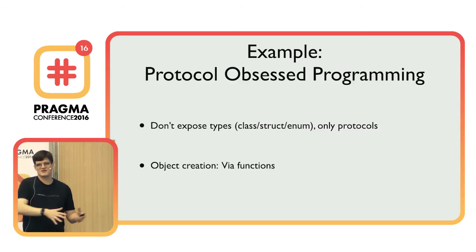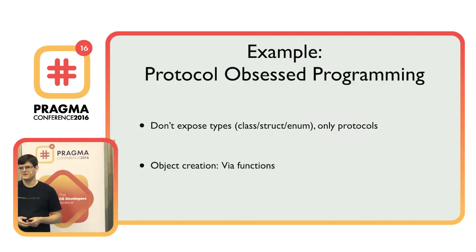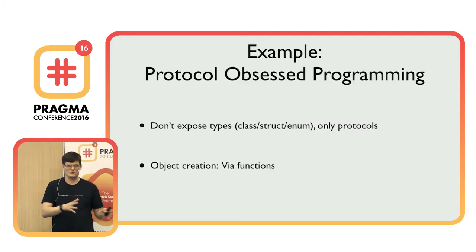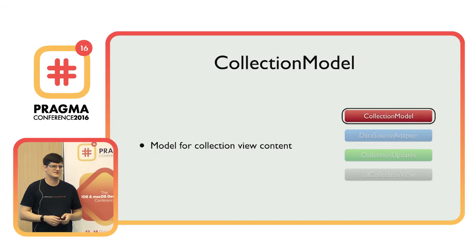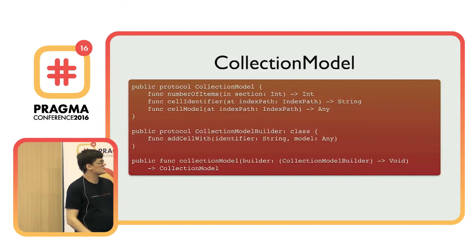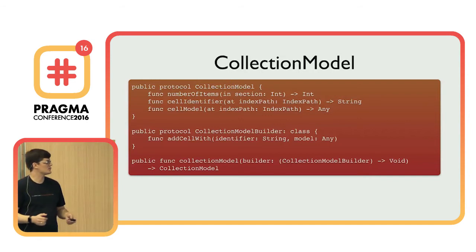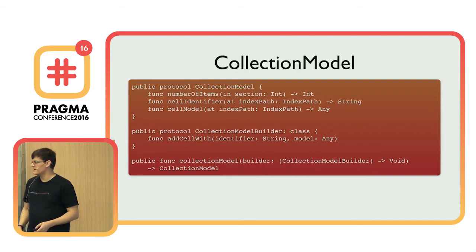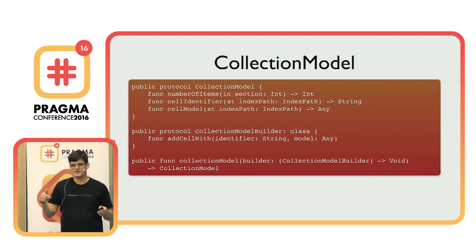First, the protocol-obsessed collection model. We need a way to construct objects, so I added a builder protocol and a function for creation. Instead of a public struct we now have a public protocol with exactly the same methods. The method to add stuff to the model is now on a builder protocol. Then we have a function that takes a block receiving this builder, which can build the object. It will be clearer when we look at the usage.